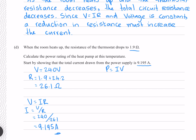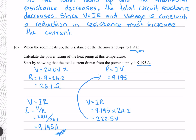Now to find the power using P = IV, we need the voltage across the heat pump, which is not the full 240 volts. Using V = IR with the current of 9.195 amps and the heat pump resistance of 24.2 ohms gives 222.5 volts to four significant figures. Substituting into the power equation gives 2046 watts to four significant figures.